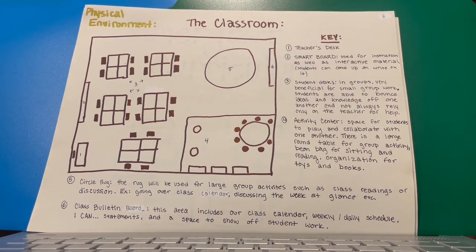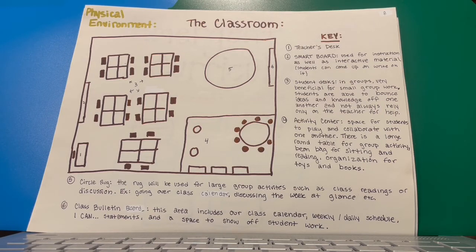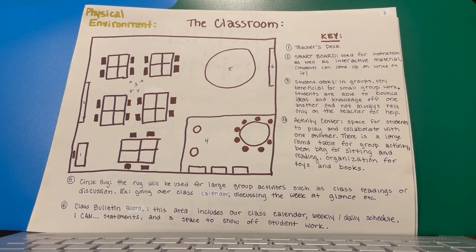Number three is student desks in groups, which is very beneficial for small group work. Students are able to bounce ideas and knowledge off one another and not always rely on the teacher for help. Number four is the activity center, a space for students to play and collaborate with one another — there's a large round table for group activities, a beanbag chair for sitting and reading, and organization for toys and books. Number five is the circle rug, which will be used for large group activities such as class readings or discussions, going over the class calendar, discussing the week at a glance, reading as a group, etc.